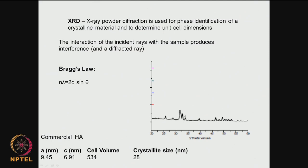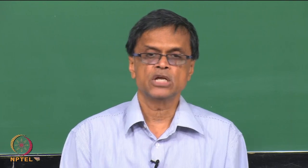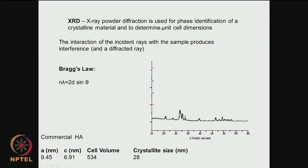For example, amorphous material degrades faster than crystalline material. When you add other materials into an existing crystalline system, the crystallinity changes and we can monitor those factors. We can also obtain the dimensions of the crystal — called unit cell dimensions — from X-ray powder diffraction, which is quite an important bulk property.